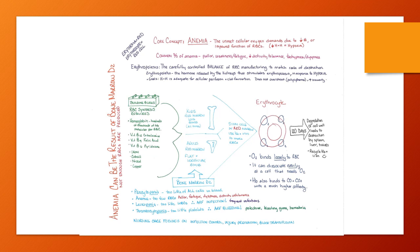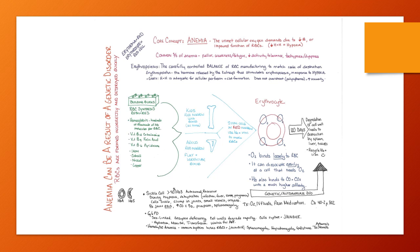Anemia can result from bone marrow disease — referred to as aplastic anemia — where bone marrow function is impaired. This results in pancytopenia: too little of all cells. We end up with anemia, leukopenia, and thrombocytopenia — too few red blood cells causing pallor, fatigue, and dyspnea; too few white blood cells putting the patient at risk for frequent infections; and too few platelets putting them at risk for bleeding, with petechiae, bleeding gums, and hematuria. Nursing care focuses on infection control, injury prevention, blood transfusions as needed, education on hand hygiene, and if the patient is neutropenic, reverse precautions or enhanced isolation.